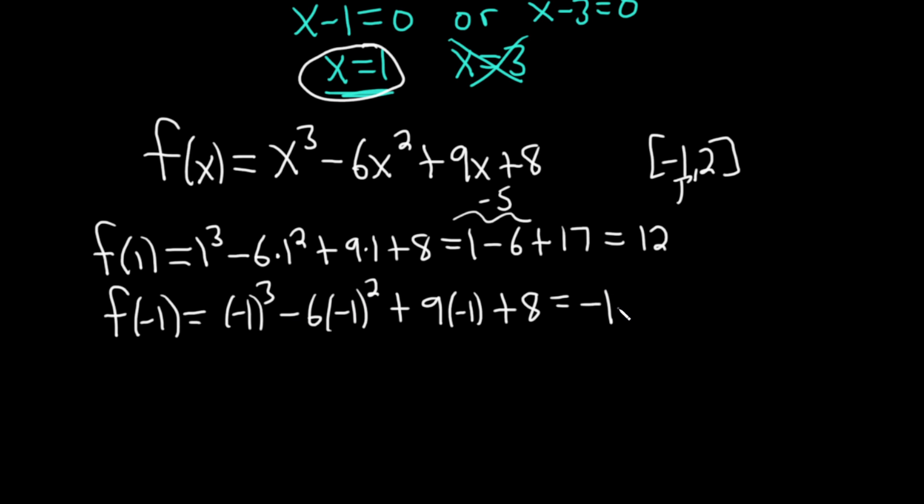This is -9, and then plus 8. So f(-1) = -1 - 6 - 9 + 8 = -7 - 9 = -16 + 8 = -8.